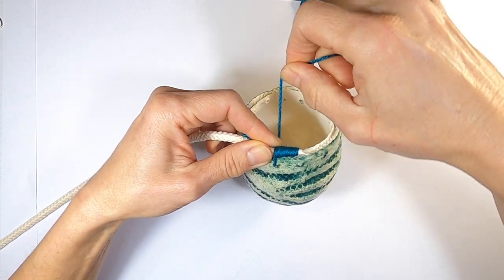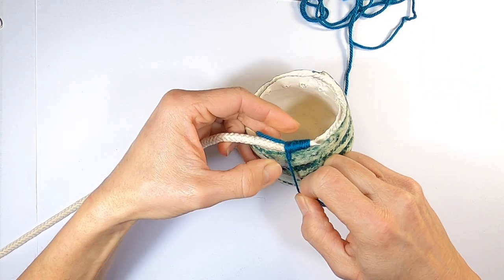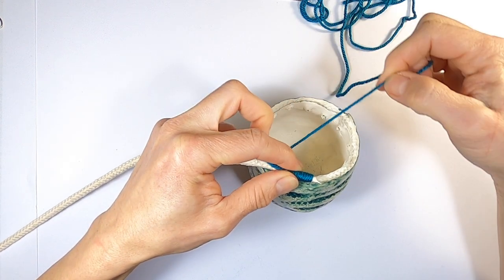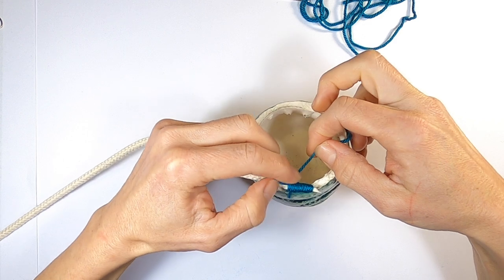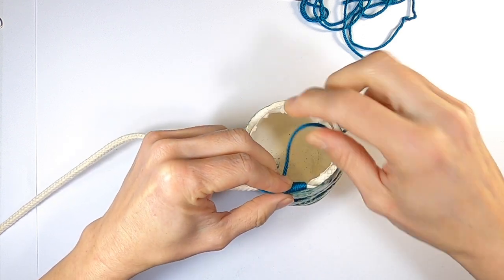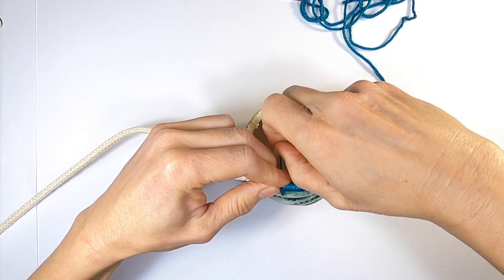Hold the cord in place with your fingers and wind the wool around the cord. You'll need to wind the wool under and around the whole pot. I'm winding the wool tightly together so that none of the white cord is showing. But you can leave gaps. It just depends on the look you're going for.